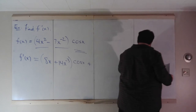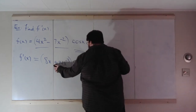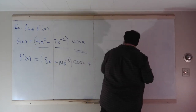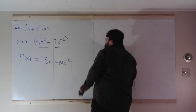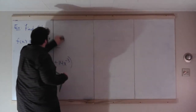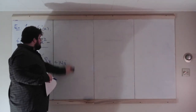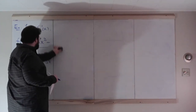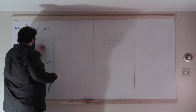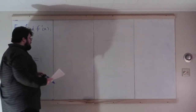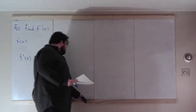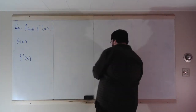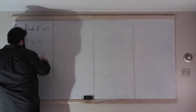This results in a positive 14x to the negative 3 because negative 2 times negative 7 is positive 14. Then plus (4x squared minus 7x to the negative 2) times the derivative of cosine x, which is negative sine x. A very common mistake is to overlook those two negatives — be careful not to miss that the product of two negatives is positive.